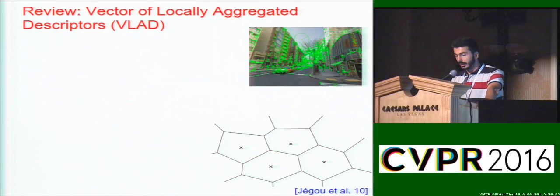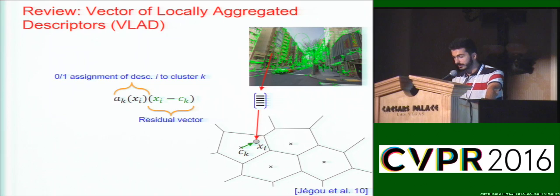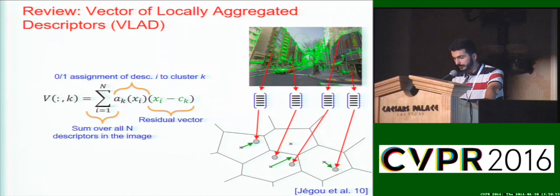A more recent pooling method is VLAD, where, similarly to Bag-of-Words, a descriptor is assigned to its closest cluster, but extra information is kept in the form of the residual, i.e. the difference between the descriptor x and the cluster center or anchor point c_k. To compute the VLAD image representation, all descriptors are extracted, assigned to their cluster centers, and their residuals are summed up and concatenated to form the final VLAD vector. The motivation is that it stores more information about the location of descriptors in the descriptor space than Bag-of-Words, which just stores the counts.